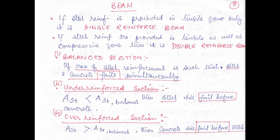What is an under-reinforced section? The area of steel is provided in such a way that it is less than the area of steel of a balanced section, so the steel will fail before concrete. If you provide less steel than what is needed for a balanced section, the steel will fail before concrete, so it is called an under-reinforced section.